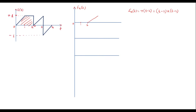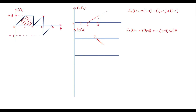The ramp signal in f4(t) begins at t equal to 2 and is supposed to stop at t equal to 3, but f4(t) continues till infinity. To stop it at t equal to 3, I will consider one more signal f5(t), which is a negative ramp signal beginning at t equal to 3. Therefore, f5(t) = −R(t − 3) = −(t − 3)·u(t − 3).